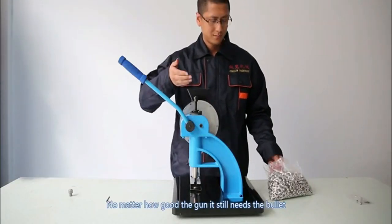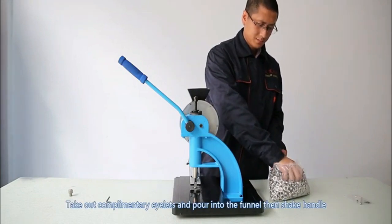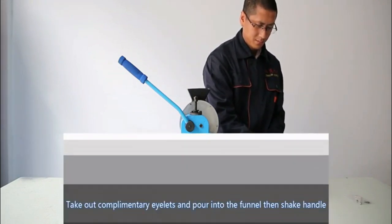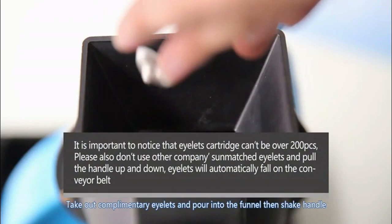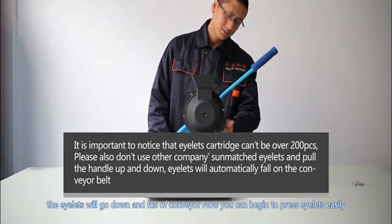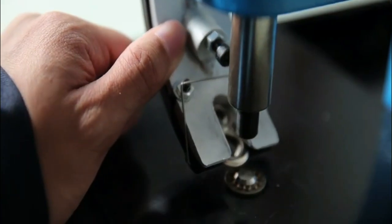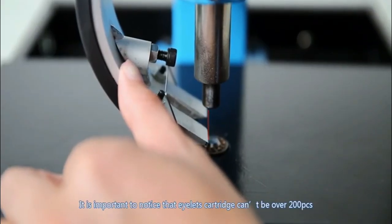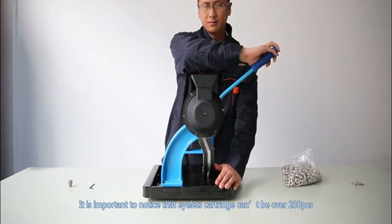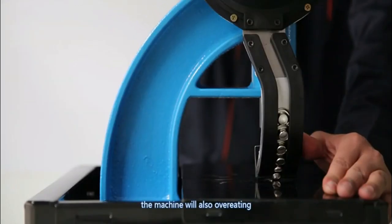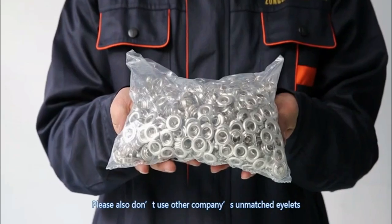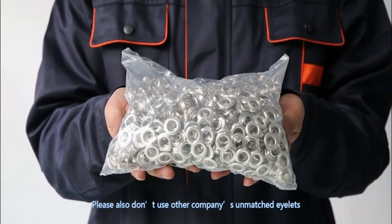No matter how good the gun, it still needs the bullet. Take out complementary eyelets and pour into the funnel. Then, shake the handle. Eyelets will go down and fill the conveyor. Now, you can begin to press eyelets easily. It is important to notice that eyelets cartridge can't be over 200 pieces. The machine will also overheat. Please also don't use other company's unmatched eyelets.